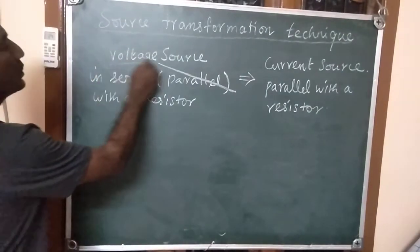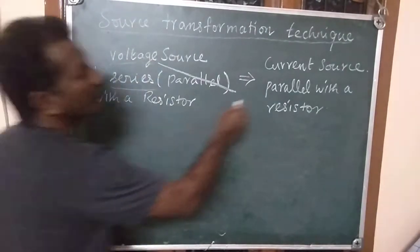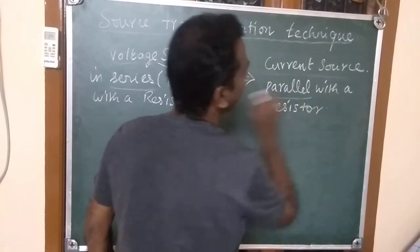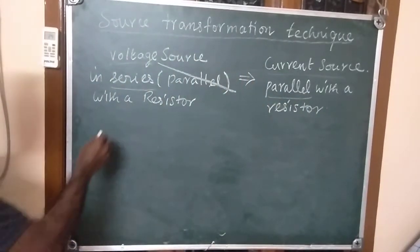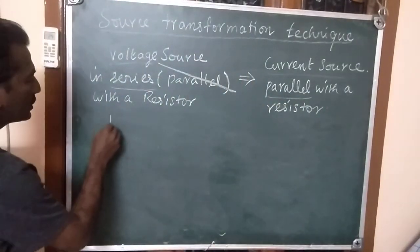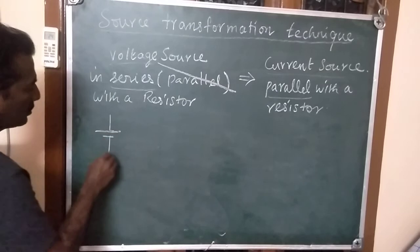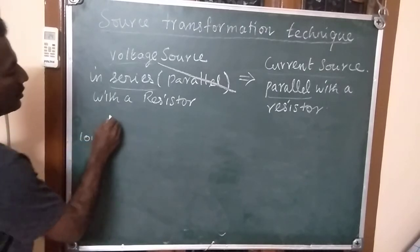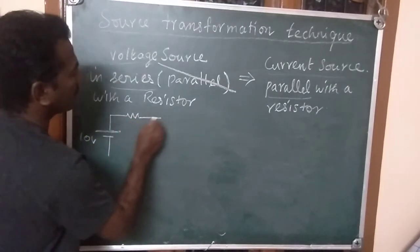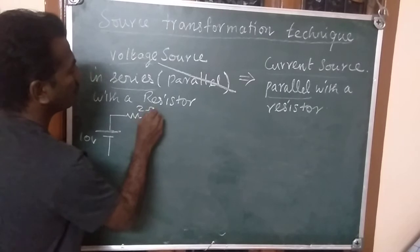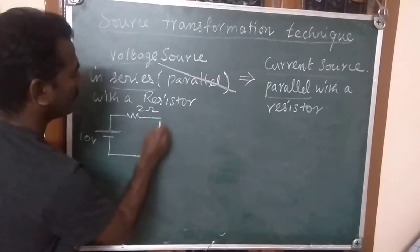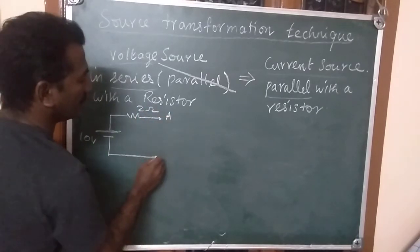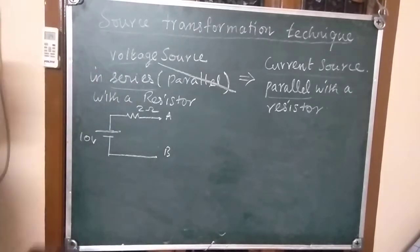A voltage source in series with a resistor can be converted into a current source parallel with a resistor. Assume a voltage source of 10 volts with a series resistor of 2 ohms between terminals A and B.